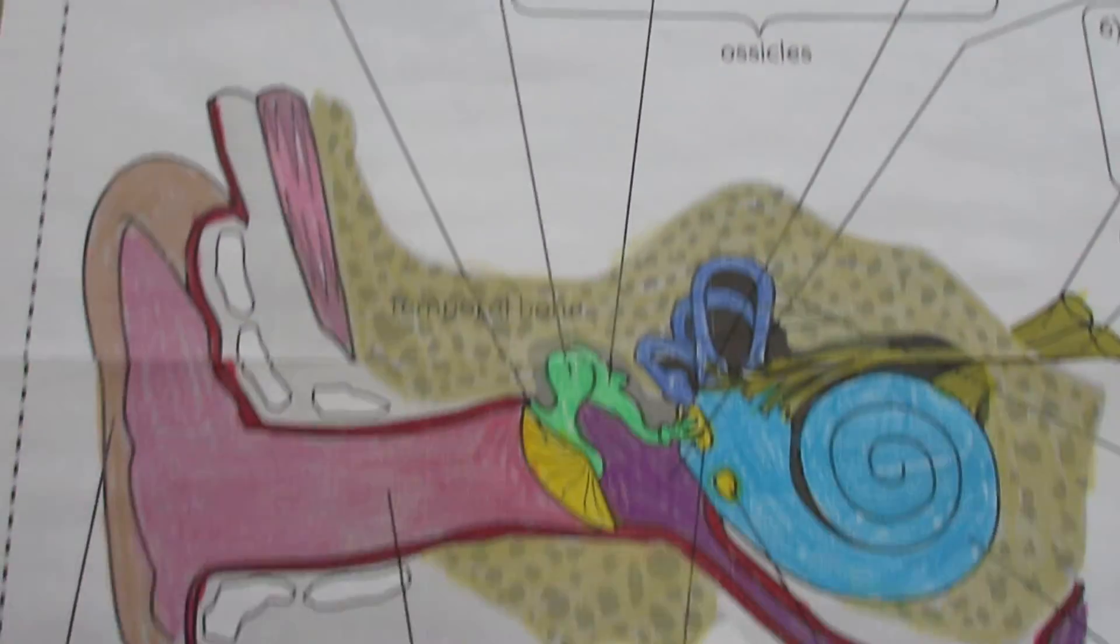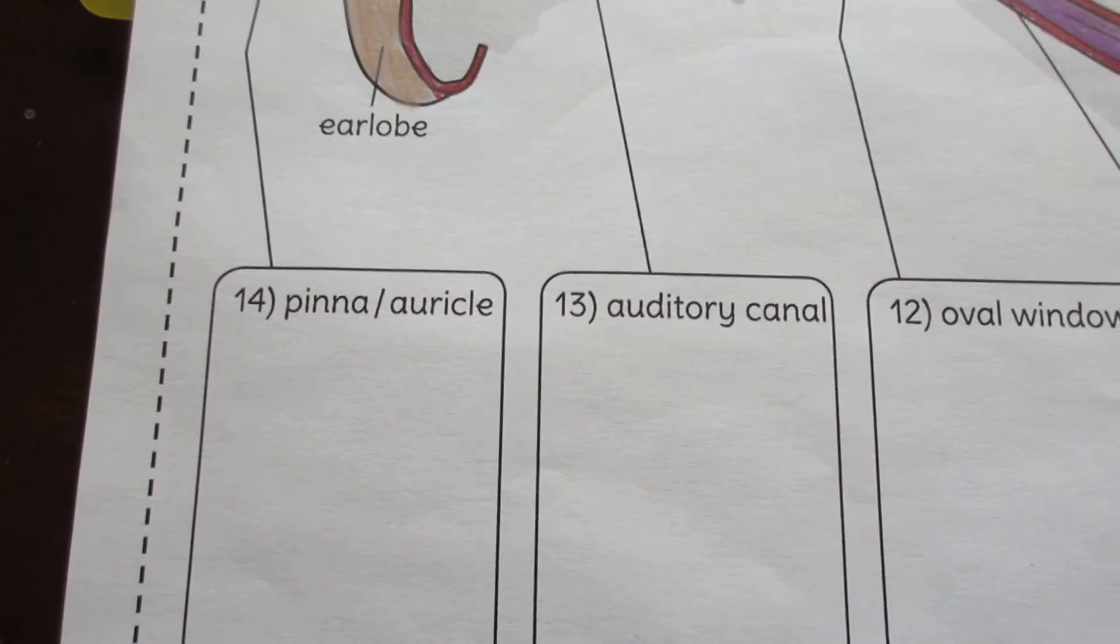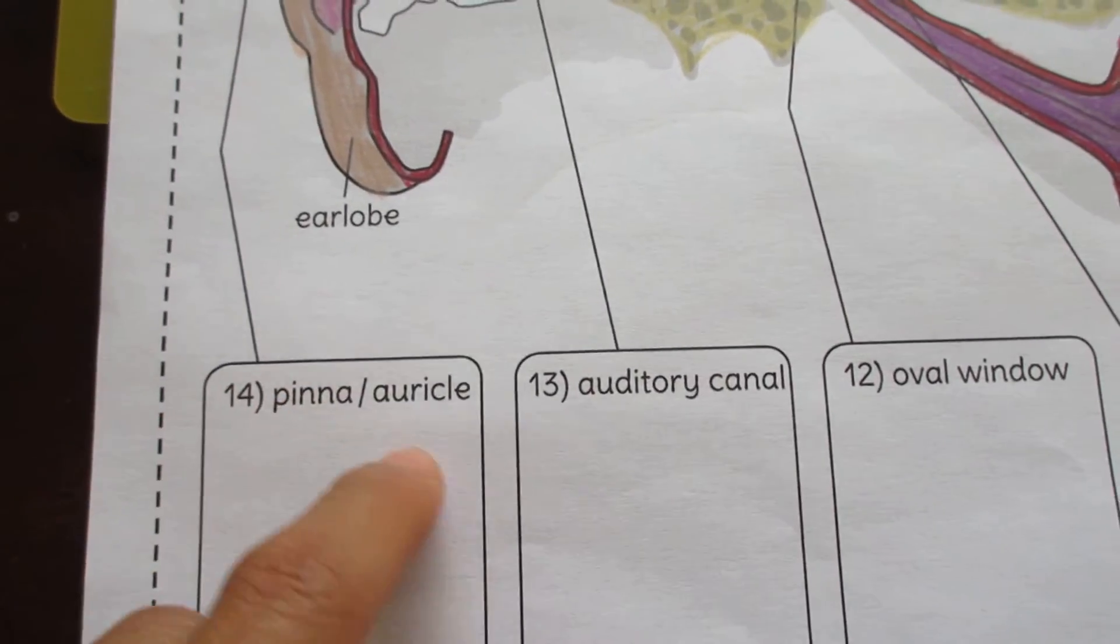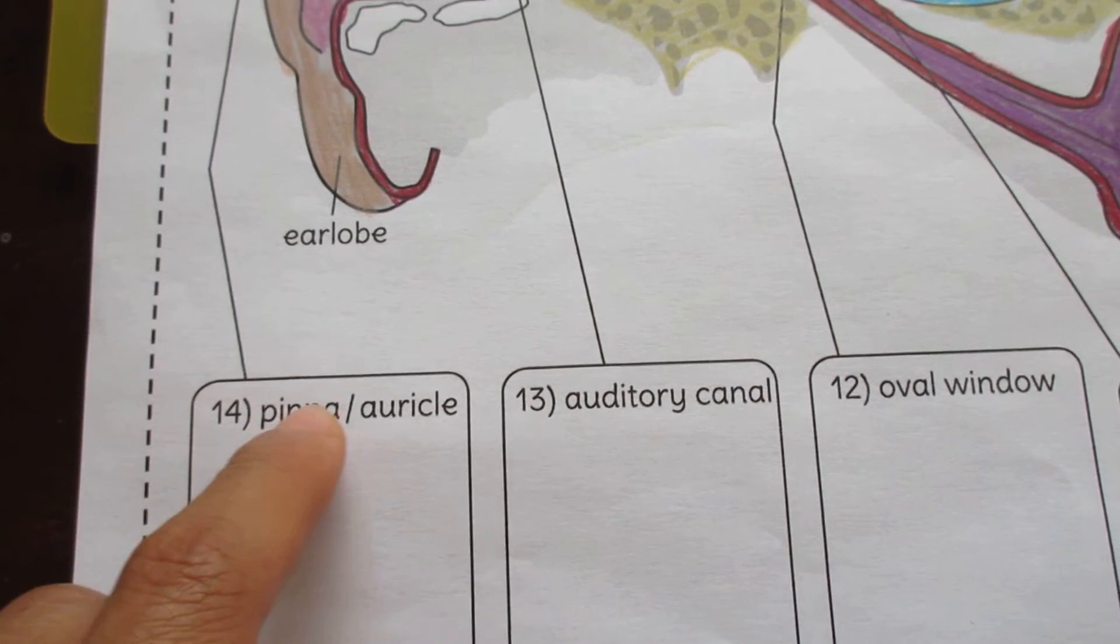Another one of the options I provide looks very similar to this, but instead of having the full label, what you'll have is the number followed by a blank.